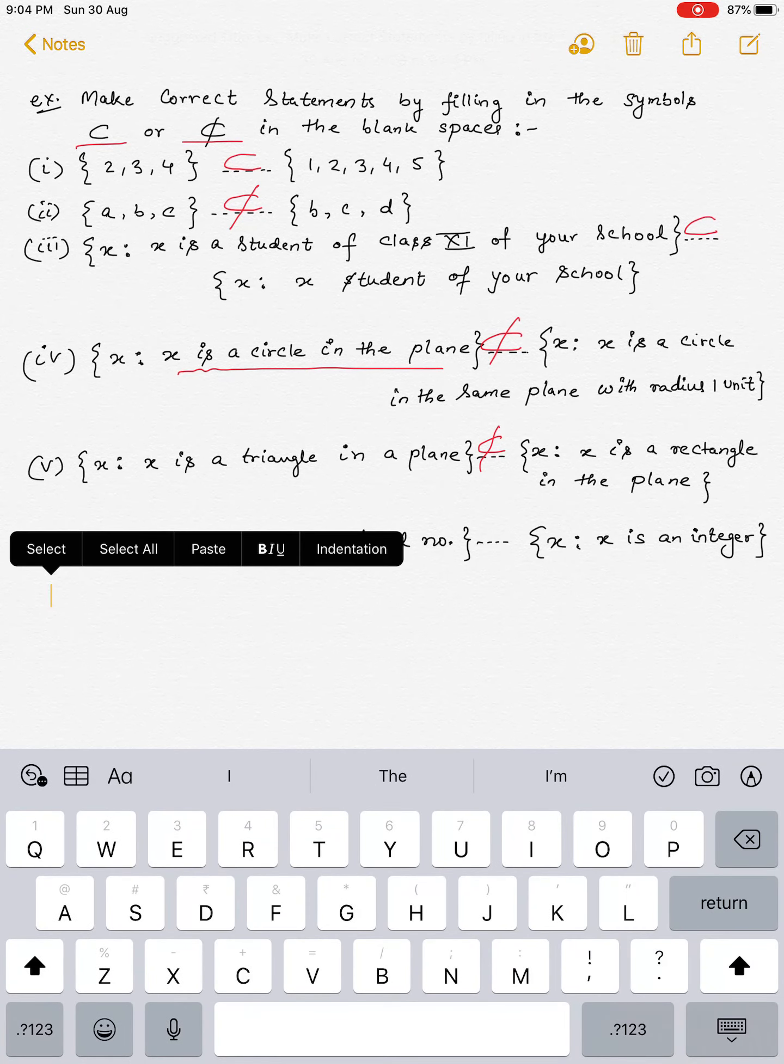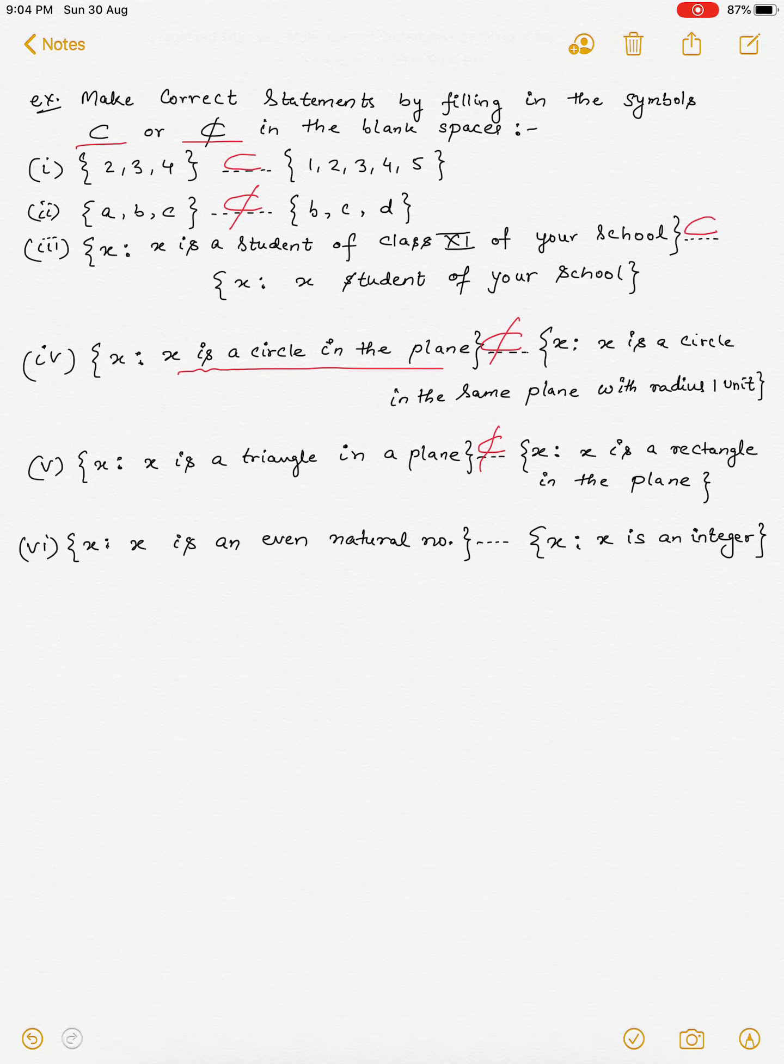X is an even natural number and X is an integer, तो हम लोग क्या करेंगे यहाँ पर? integer का तो subset होगा, even natural number, this is subset, तो subset and not subset.